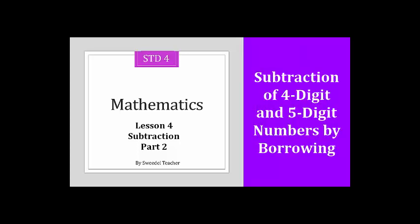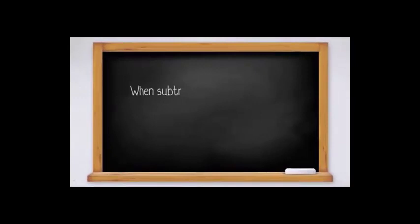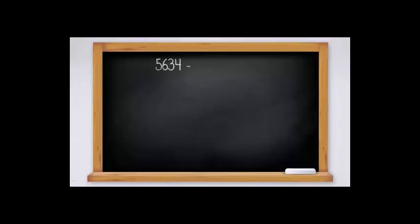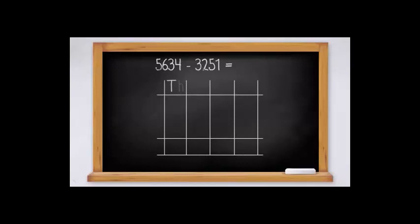Today in this lesson we will understand subtraction of four-digit and five-digit numbers by borrowing. Let's start with subtraction of four-digit numbers by borrowing. When subtracting four-digit numbers we use the same method as for two and three-digit numbers. Let us solve one example: 5634 minus 3251. First, arrange the numbers in columns as per their place value — thousands, hundreds, tens, and units.